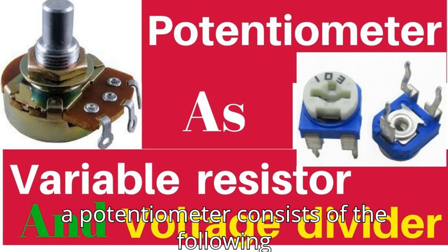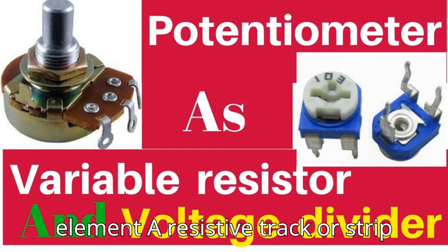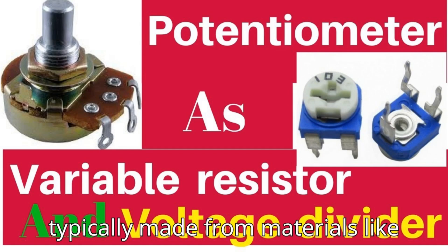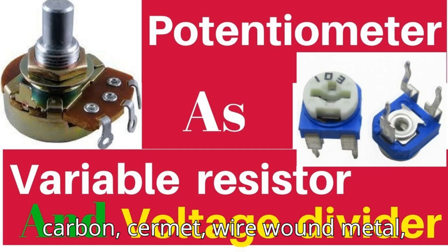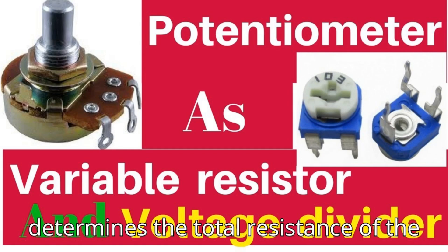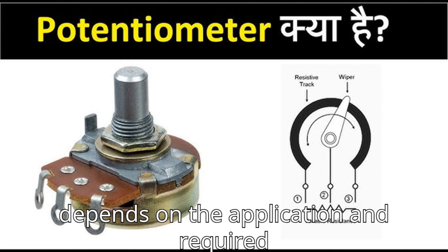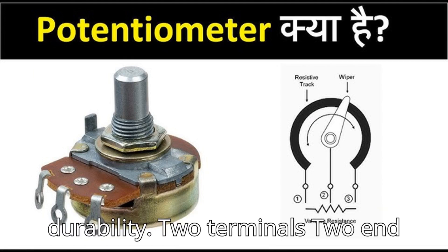The structure of a potentiometer consists of the following key components. First, the resistive element: a resistive track or strip, typically made from materials like carbon, cermet, wire wound metal, or conductive plastic. This element determines the total resistance of the potentiometer. The material choice depends on the application and required durability.